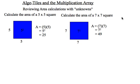If you look at the area of a 7 by 7 square, 7 times 7, another way of writing it is 7 squared. The result is 49.